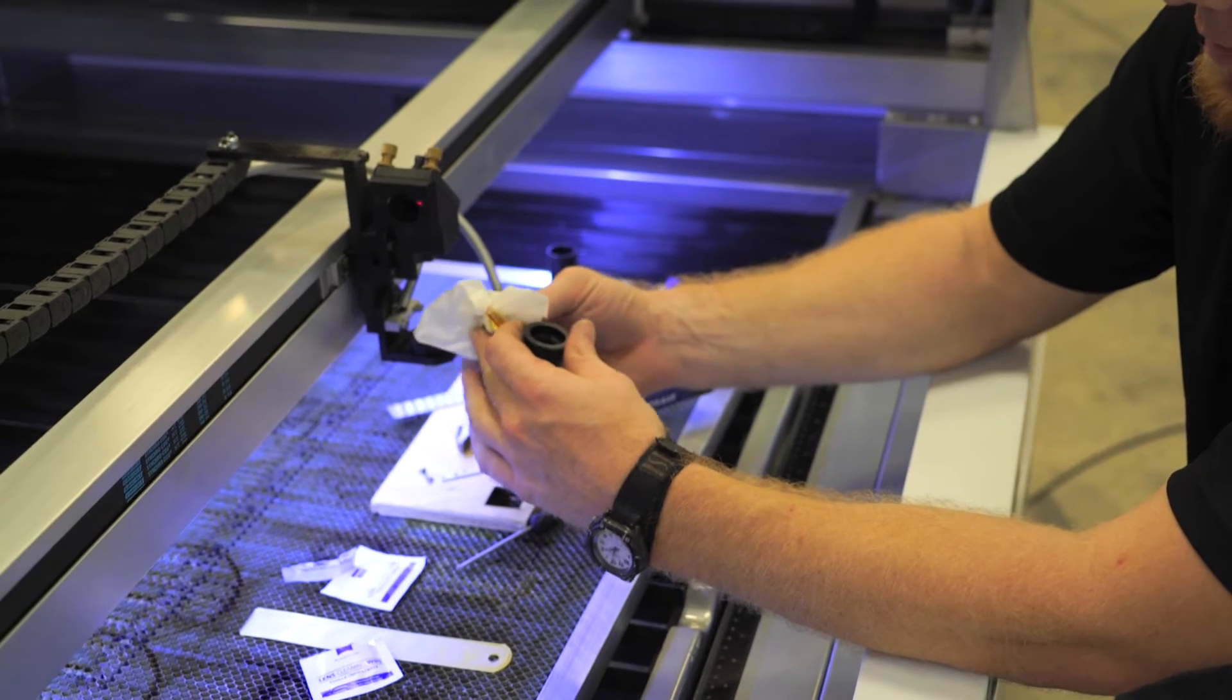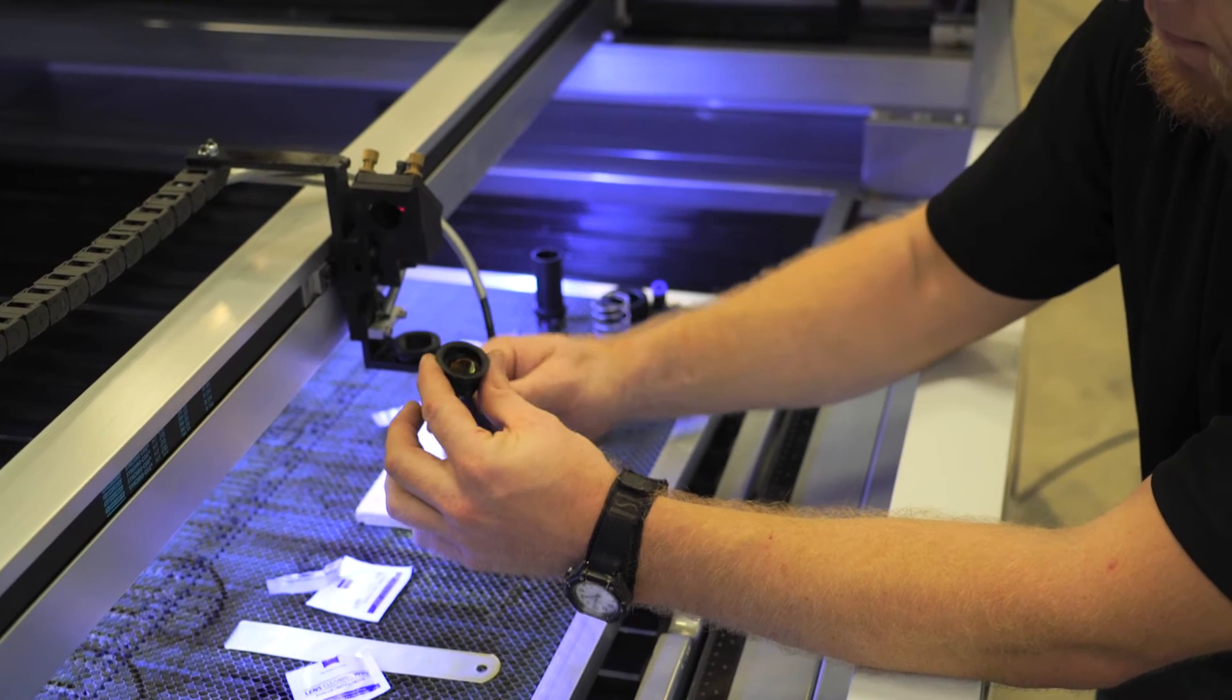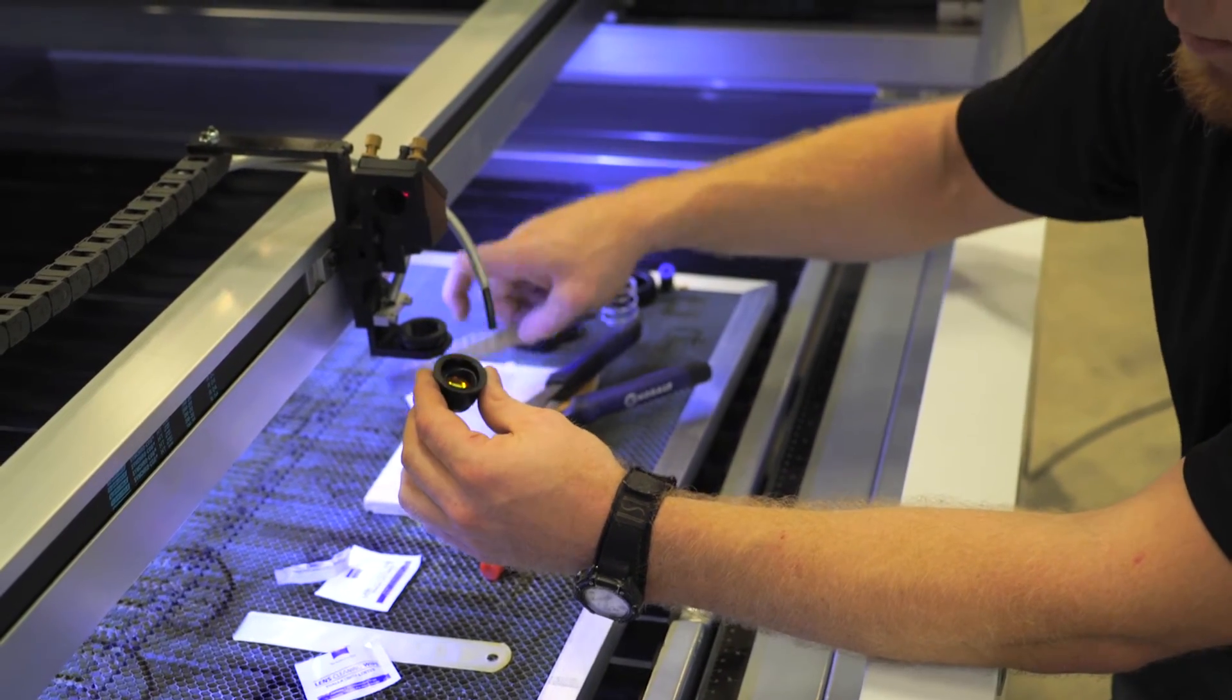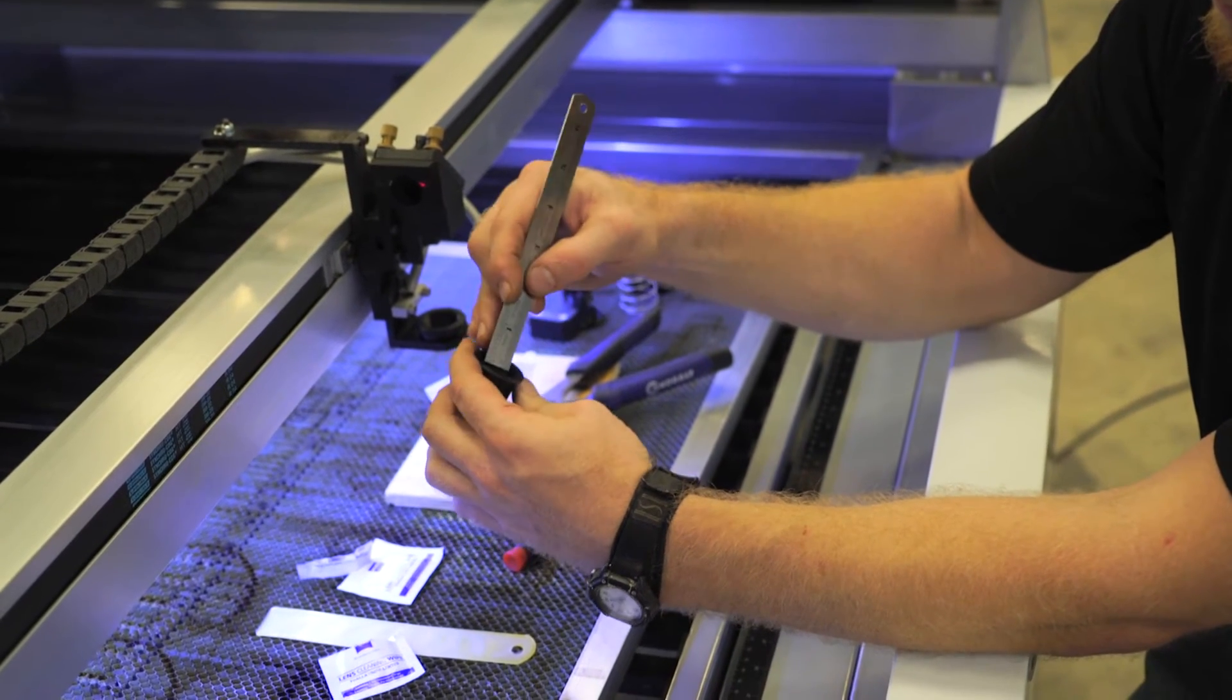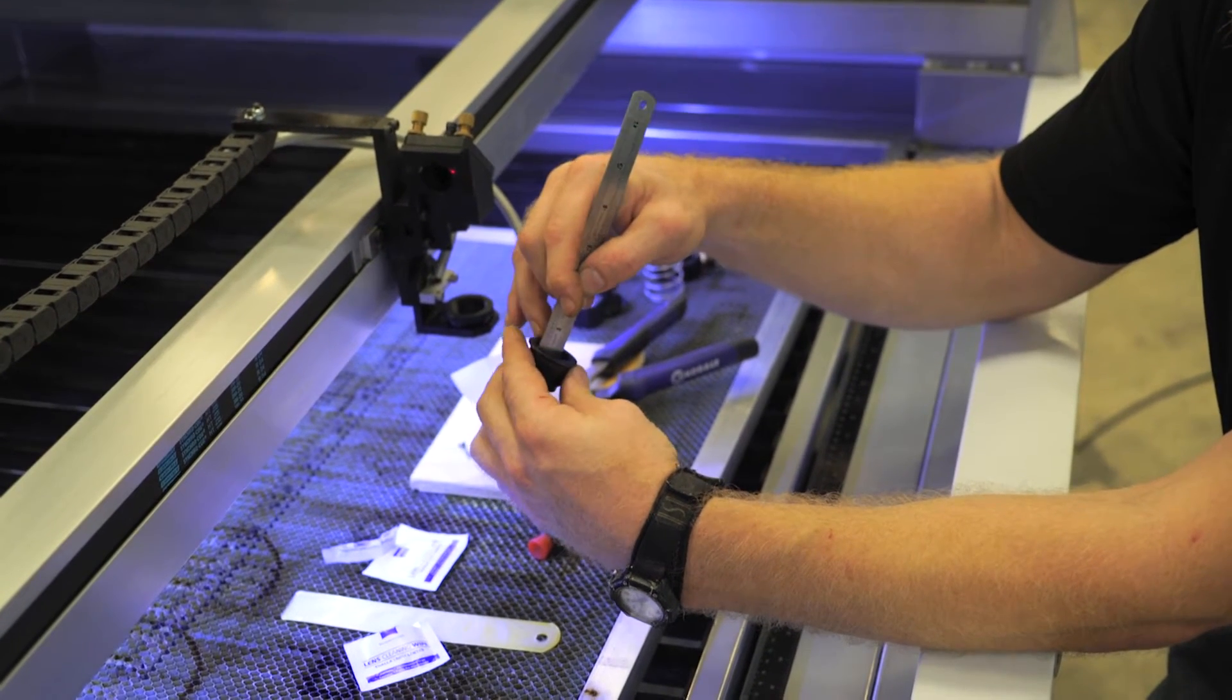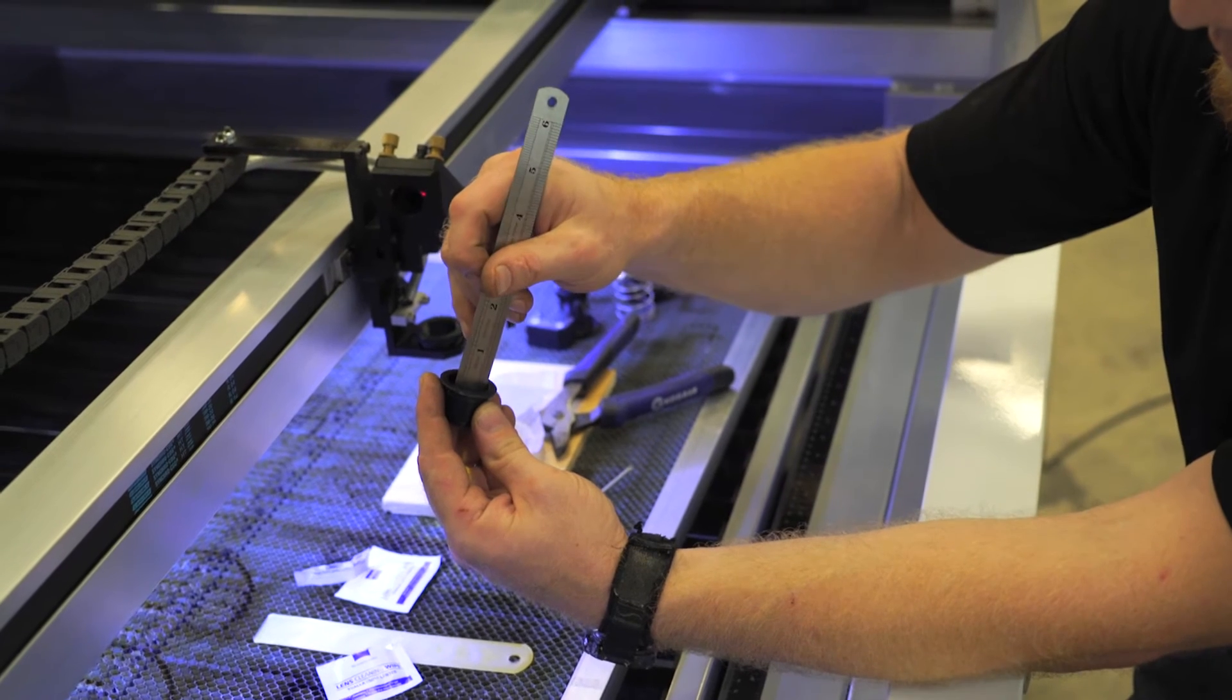When you put your lens back in, you want to make sure that the concave part, which is the rounded part, is facing up. O-ring goes back in. They're a little tight, so I like to take my ruler and push it back in there. Take the nut, put it back on top. Twist it back in with your ruler.